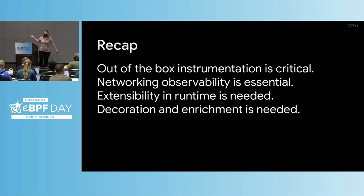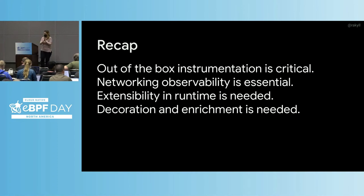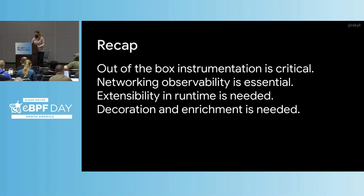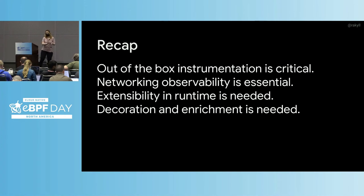To recap: we talked about out-of-the-box networking being very essential because we have all these small pieces talking to each other over the network. Extensibility at runtime is really critical because we want to be able to enable and disable based on the situation. And context — we want to be able to decorate and enrich the data so it becomes much easier when we're navigating it.